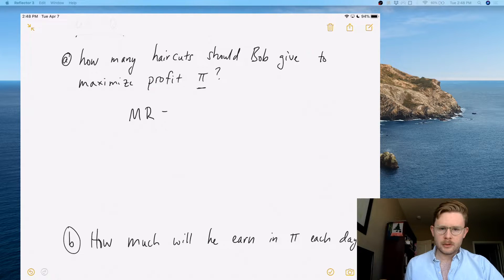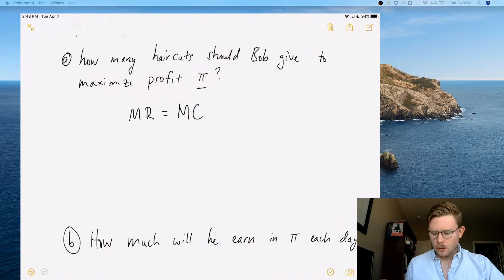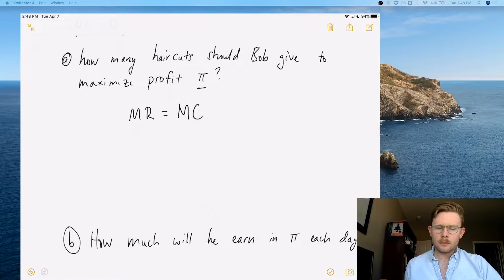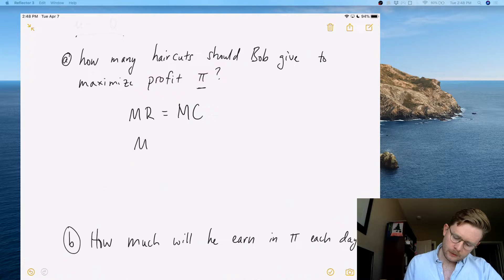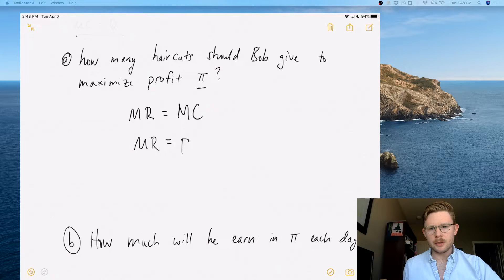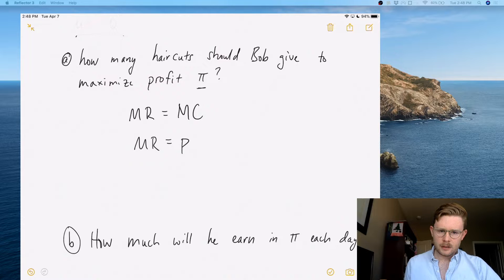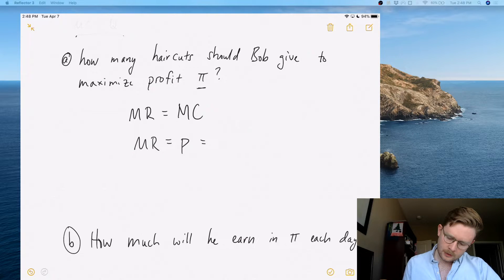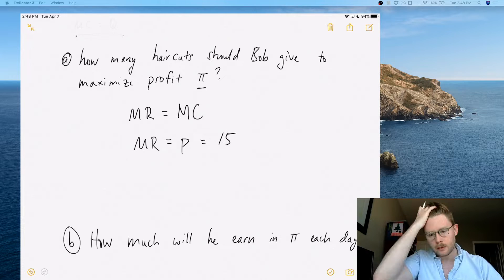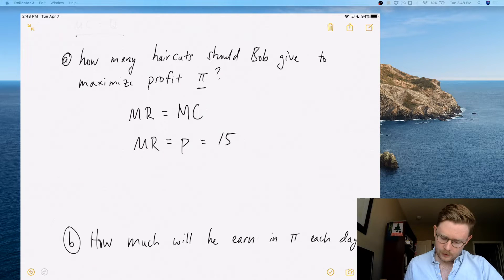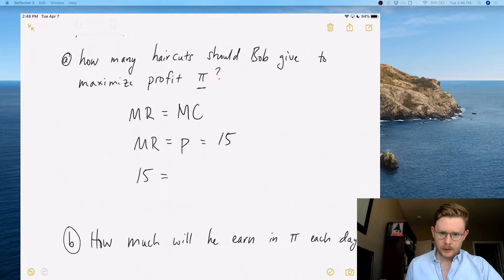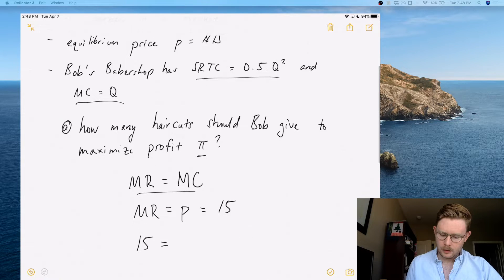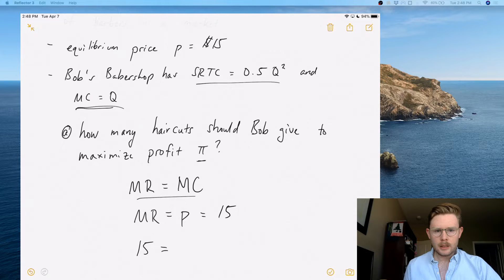Okay, since we're talking about a perfectly competitive market, we have to remember that marginal revenue is equal to price, because the producers don't get to set their own price. They're given the price by the market. In this case, that's 15, as it says in the question itself. So we have 15, substituting back into this first equation here, 15 for marginal revenue equals—we already said the question gives you that marginal cost is equal to Q.